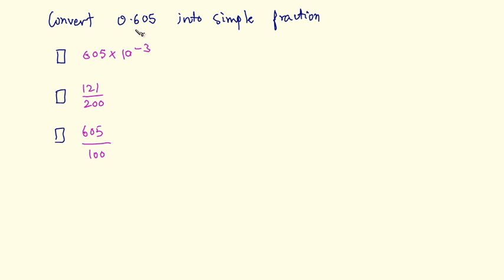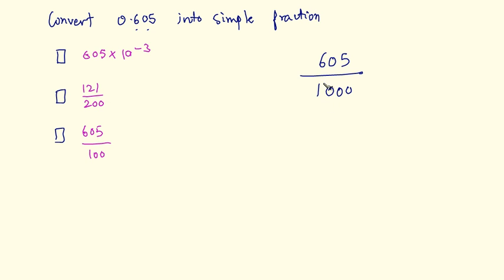How do you convert 0.605 into a simple fraction? Write this number without the decimal point: 605, divided by 1 followed by some number of zeros. There are 3 digits after the decimal point, so 605 divided by 1000. Now reduce to the lowest terms. We can divide both numerator and denominator by 5. 605 divided by 5 gives 121, and 1000 divided by 5 gives 200. So the answer is 121 by 200.